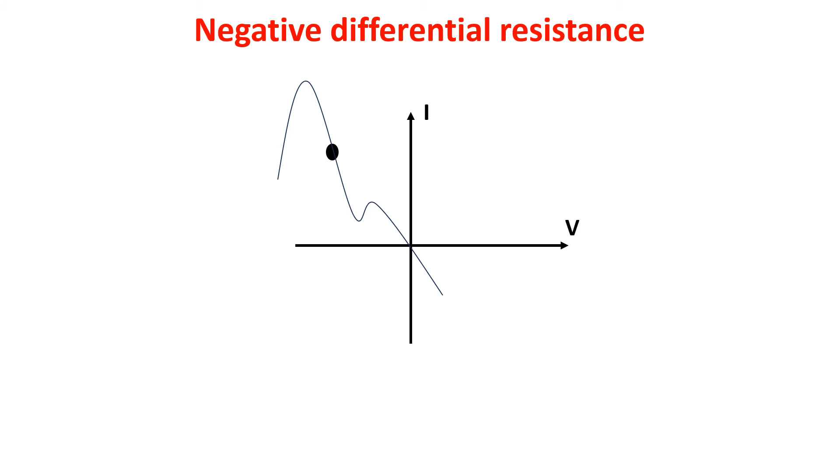Until now, we have seen static negative resistance, which is the common definition of resistance. So voltage divided by current, which is the slope of the line from the origin to the point on the IV curve. But in electronics, negative resistance is a property of some electrical circuit and devices, in which an increase in voltage across the device's terminals result in a decrease in current through it. This is in contrast to an ordinary resistor in which an increase of applied voltage causes a proportional increase in current due to Ohm's law, resulting in a positive resistance.